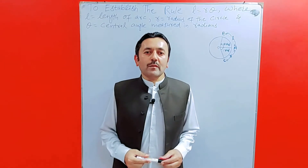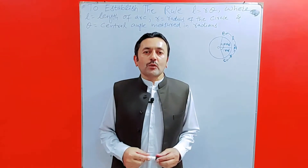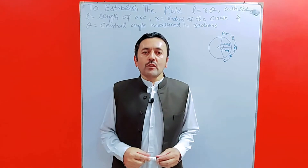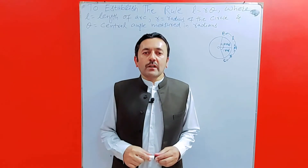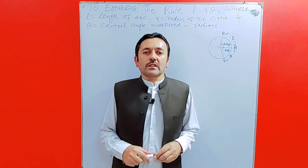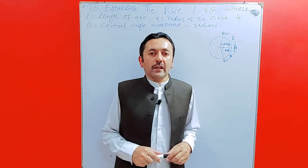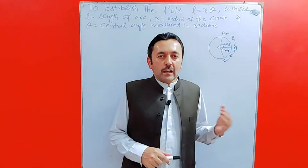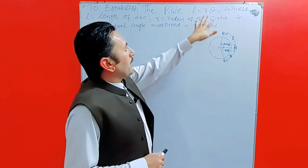Bismillahirrahmanirrahim, this is Sayyid Imran Khan with a new video of Maths Made Easy. Today we are going to establish the rule l is equal to r theta, where l is the length of the arc, r is the radius of the circle, and theta is the central angle. l is equal to r theta — the proof is as follows.